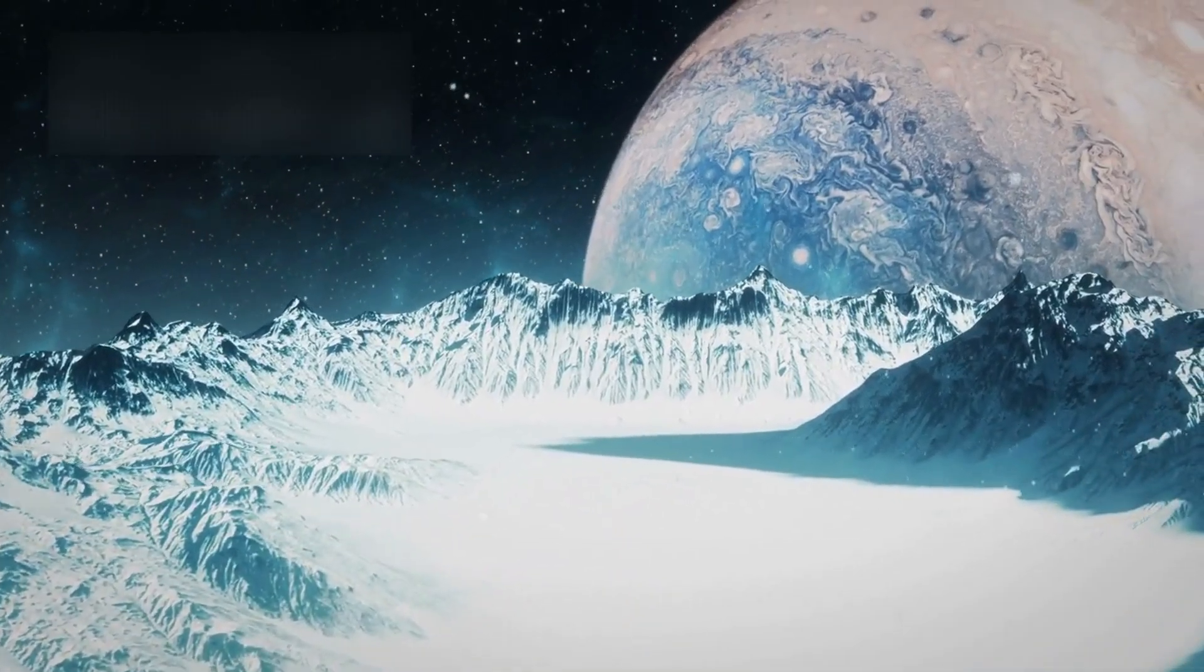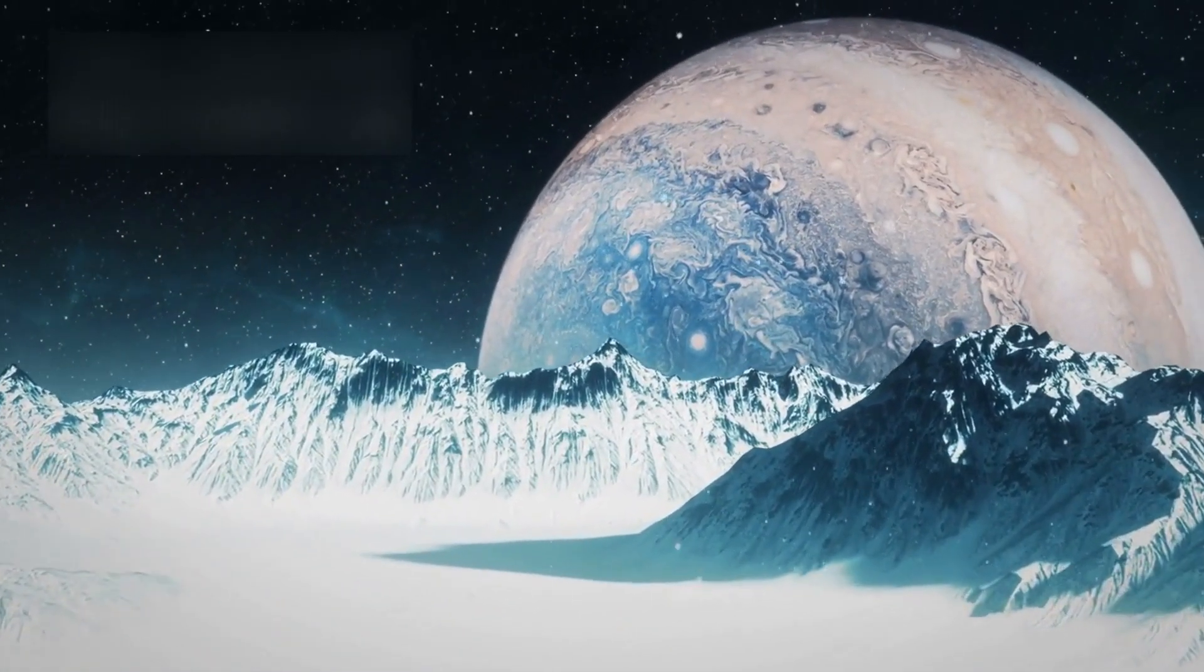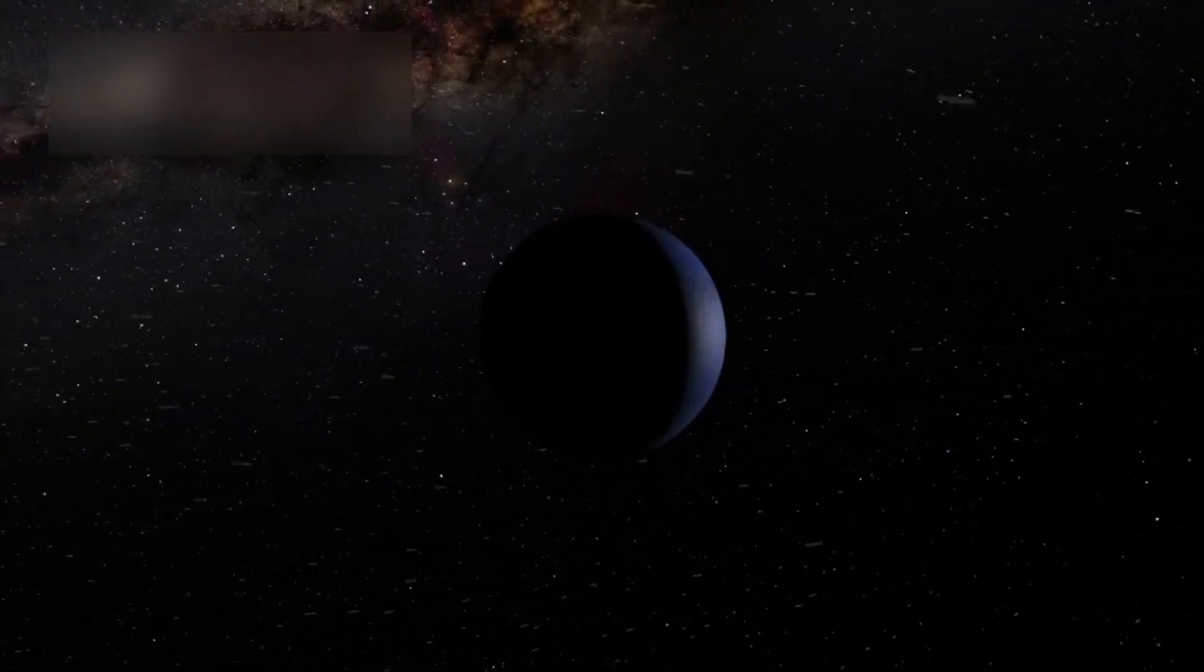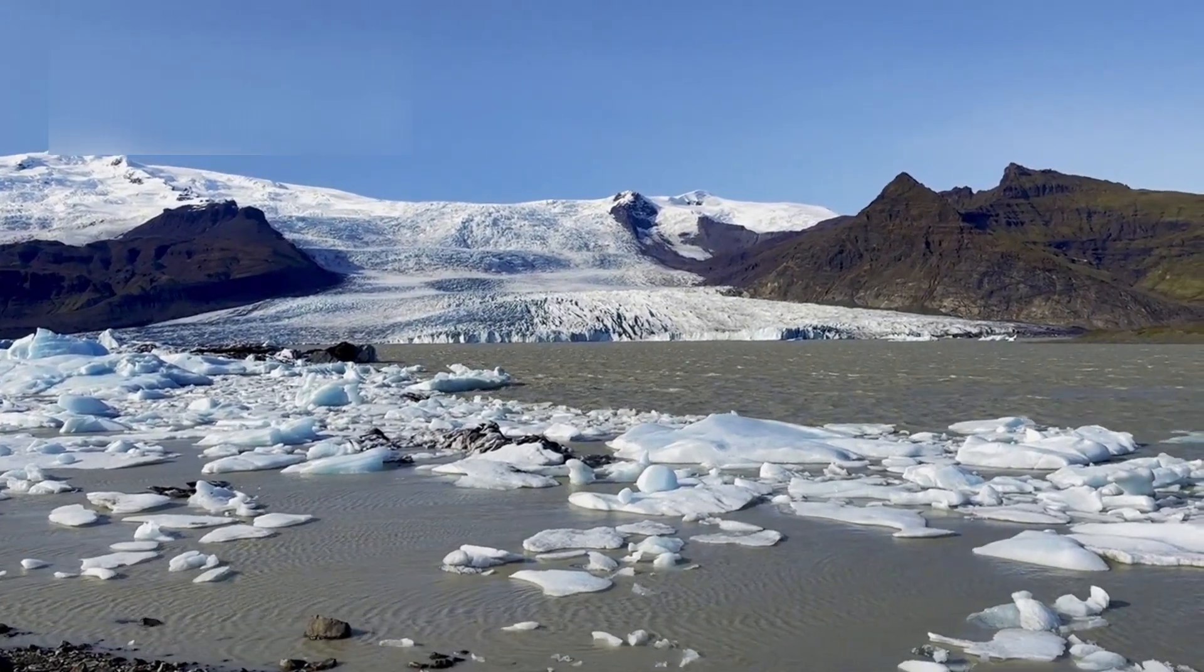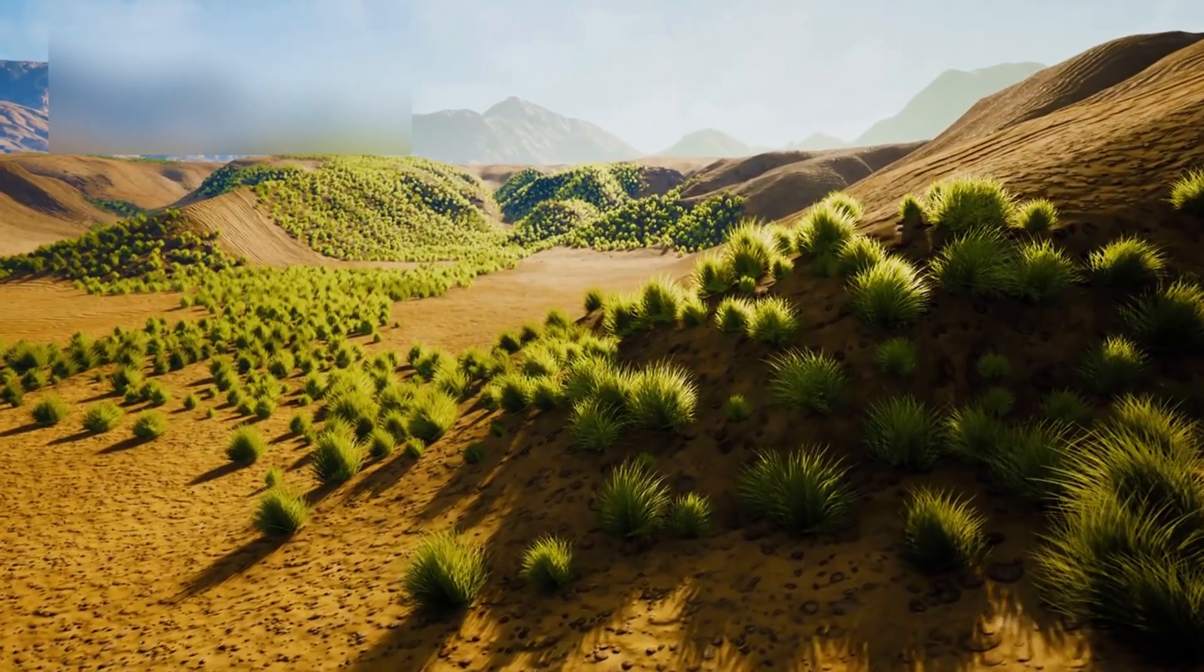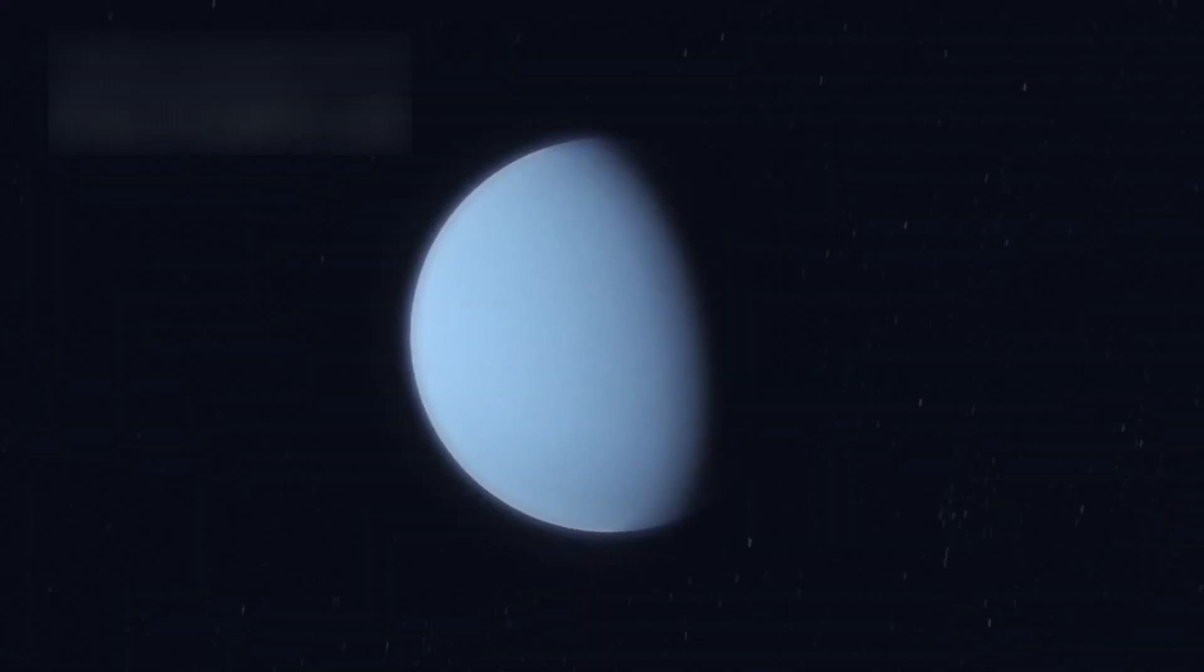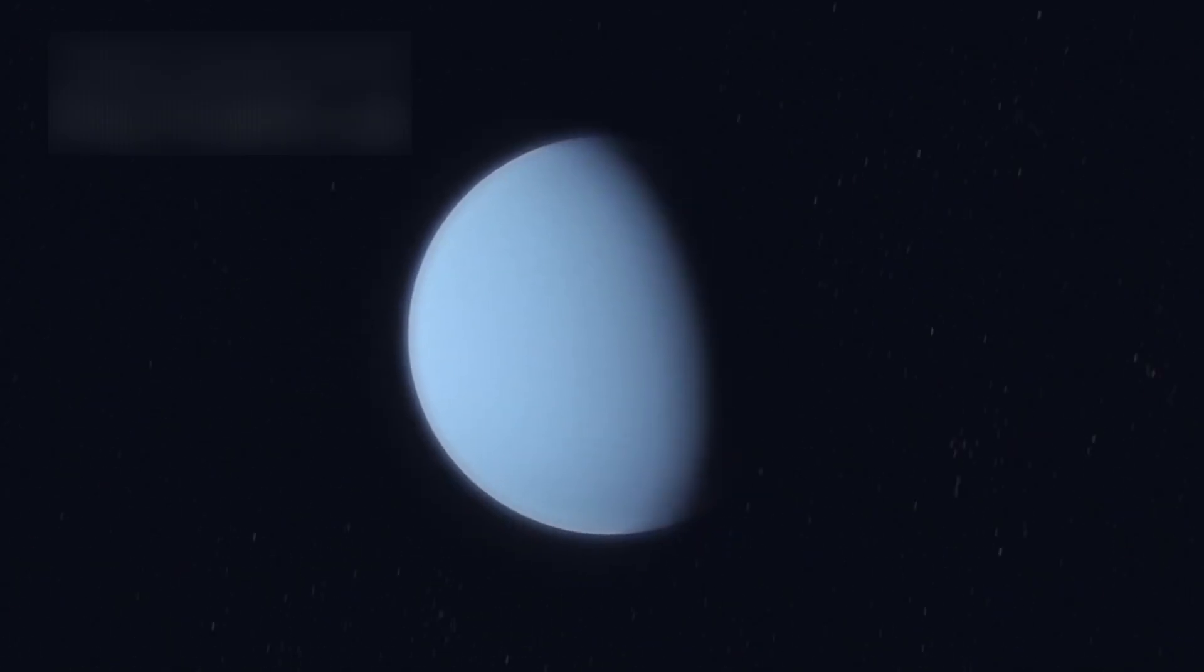Pluto is also unique among the many icy bodies of the Kuiper belt, a distant region filled with frozen debris from the early solar system. While most of these objects are cold and motionless, Pluto stands apart. It has moving glaciers, an active atmosphere, complex chemistry, and internal heat. It is, quite literally, the most alive world in a region once thought to be dead. And that raises a deeper question: if Pluto can remain active this far from the Sun, what other secrets might be hiding in the icy frontier beyond Neptune?